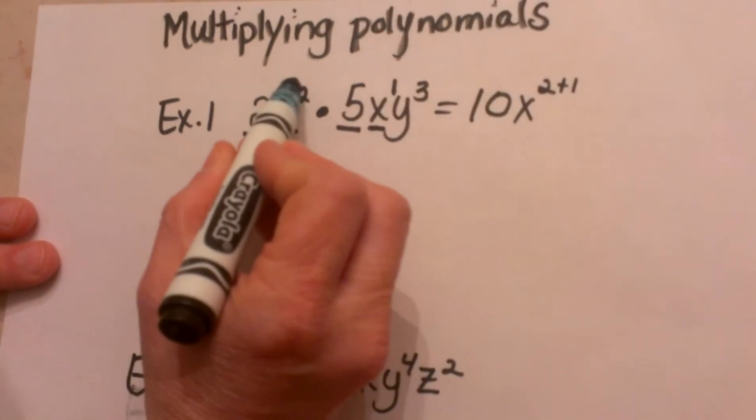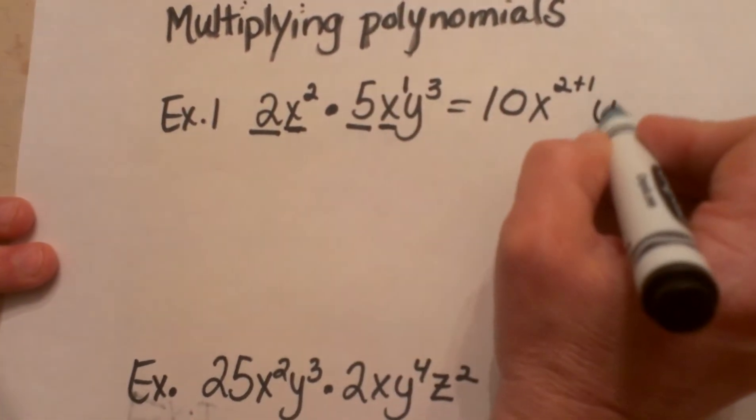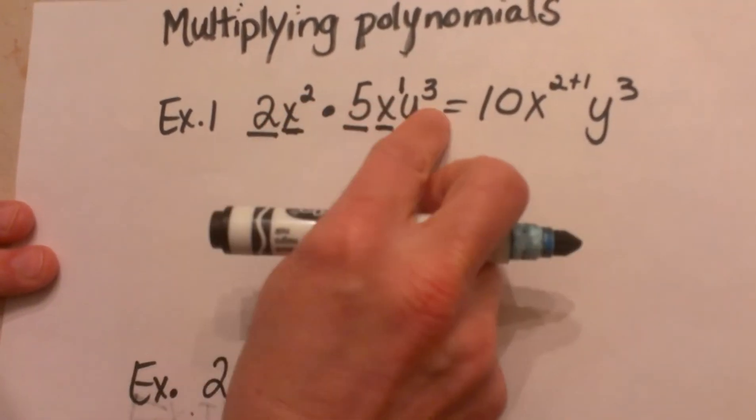So that is really just saying 2 plus 1 and then I am going to bring over my y cubed because I do not have a y in both terms.